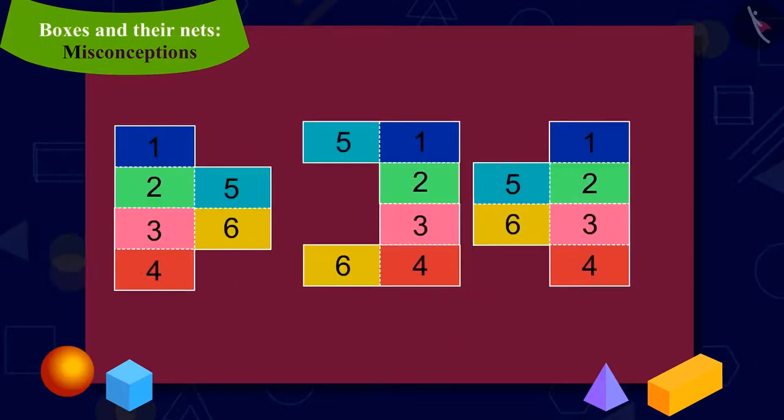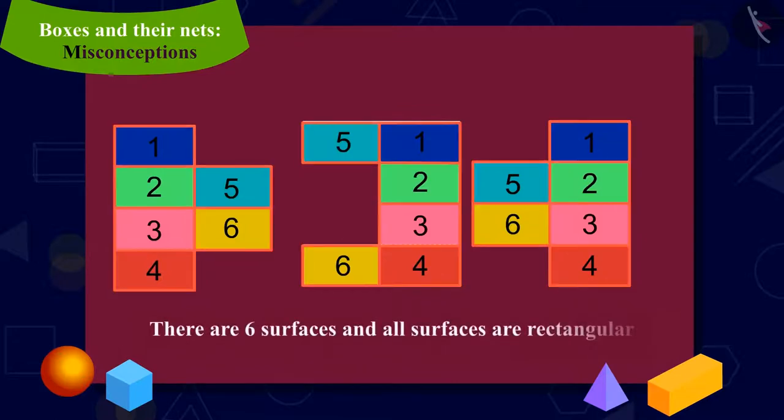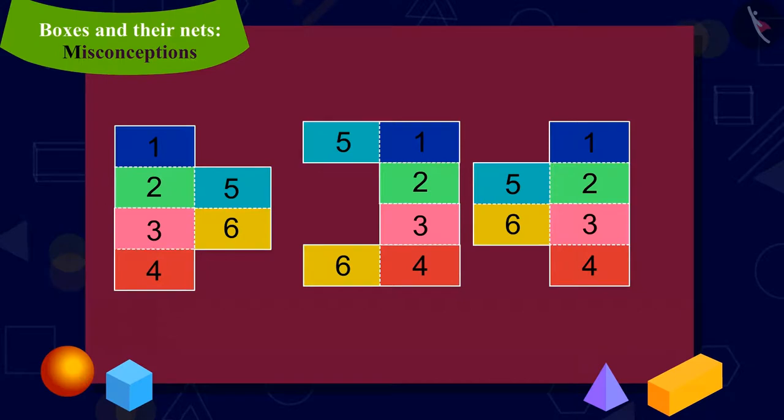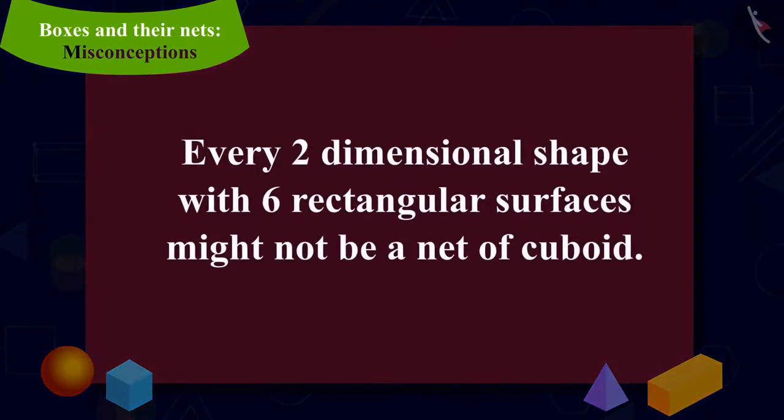Kids, is it possible to have more such shapes which have six surfaces and all the surfaces are rectangular also, but we cannot make a cuboid by folding them? Every two-dimensional shape with six rectangular surfaces might not be a net of cuboid.